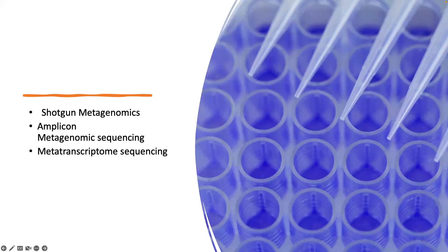Our next section is shotgun metagenomics — at least the part I'm going to handle — but the case study covers three different methods in sequencing. Shotgun metagenomics is a natural continuation of what we had just spoken about with whole genome sequencing. This is essentially whole genome sequencing, but for an environmental sample, and I'll have a more detailed description as we get into it.